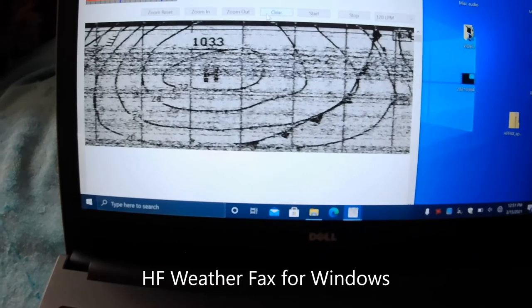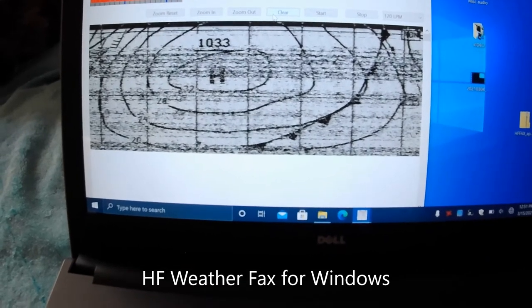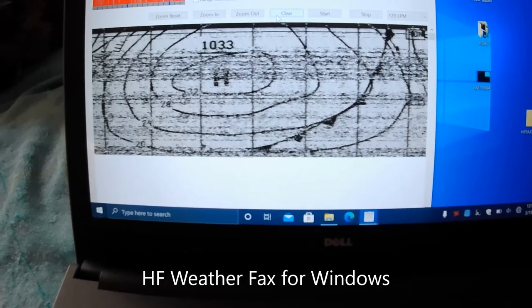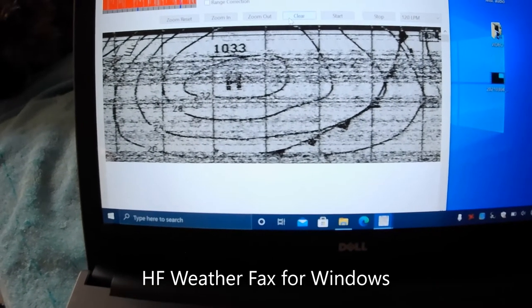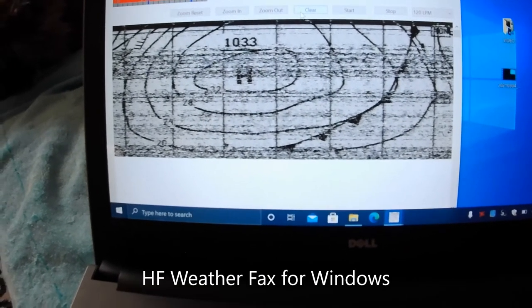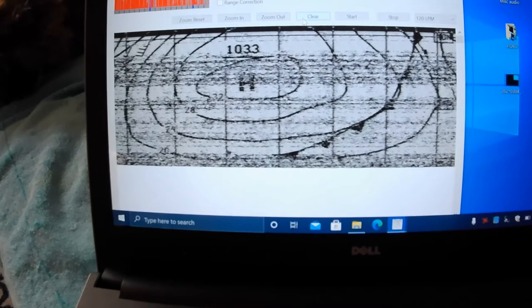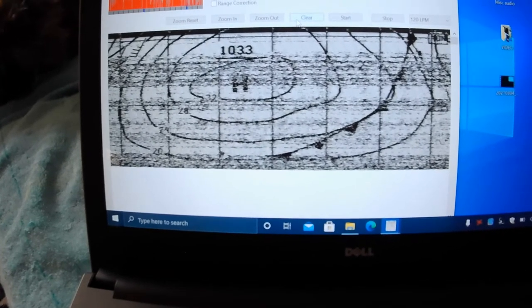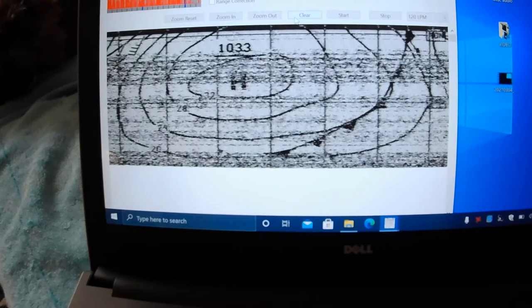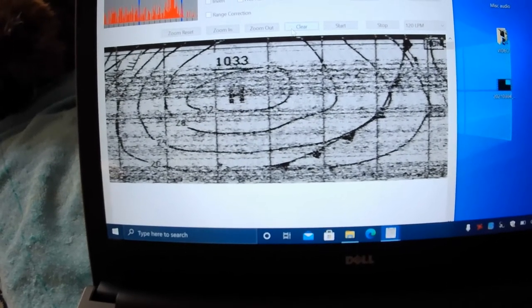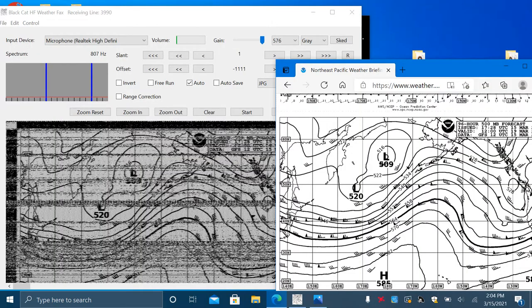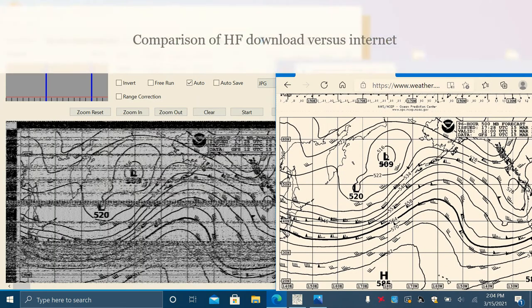So this is showing a PC download of the image. Overall broadcasts are about half hour to 45 minutes and provide a number of charts. Download rates are relatively slow, about 120 lines a minute or so. So you definitely need a little bit of time to download all the charts. But once you get used to this, you'll be able to figure out what charts are most useful to you.